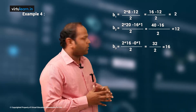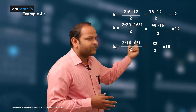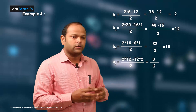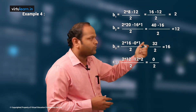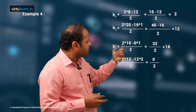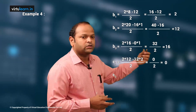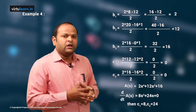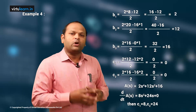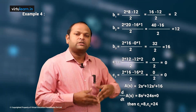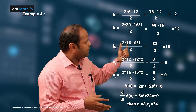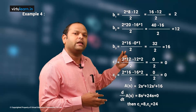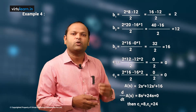Moving to the s³ row, c1 = (2×12 − 12×2)/2 = 0 and c2 = (2×16 − 16×2)/2 = 0. All elements of the s³ row are zero — this is exactly Special Case 2. In Special Case 1, only the first element is zero while the rest are non-zero, and you replace that zero with epsilon. Here, the entire row is zero, requiring the auxiliary equation approach.